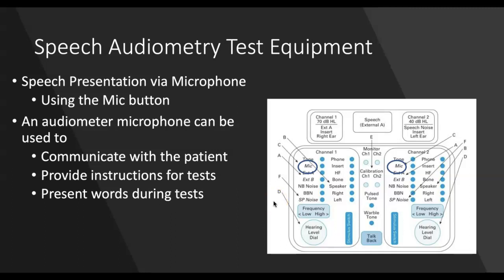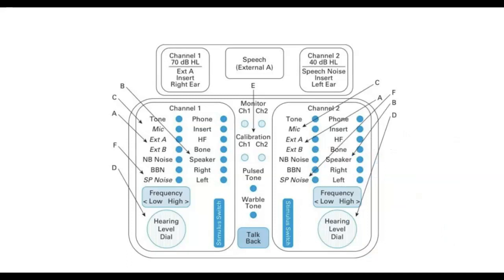The audiometer is used to communicate with the patient and provide instructions. Once the patient is in the booth with headphones on, we communicate through the audiometer. There's a microphone button we usually use to communicate back and forth, and a talk back button that allows us to talk to the patient. The microphone is what we use most often to present in a monitored live voice setting.